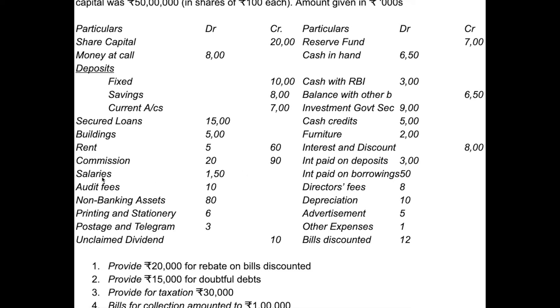Salaries, audit fees, director fees, depreciation, printing and stationery, advertisement, postage and telegram, and other expenses — these are all operating expenses, and these are all Schedule 16.